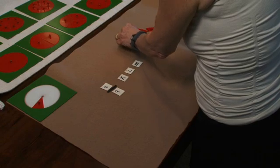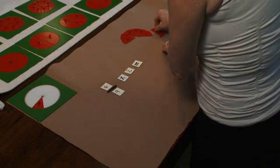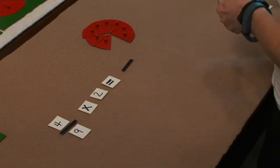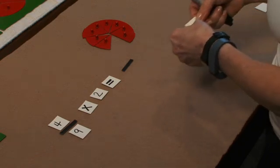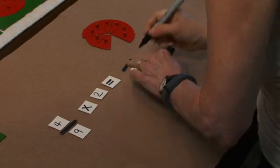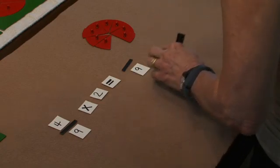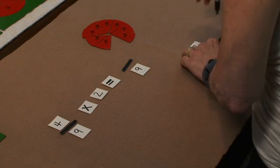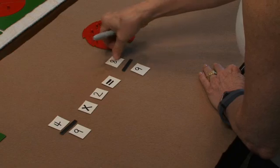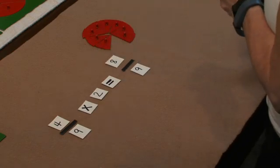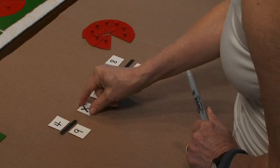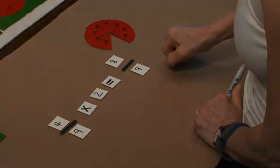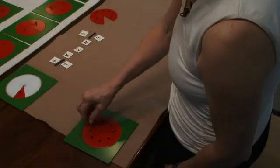And the product, the answer, is 8/9. And again, we're seeing the action happening with the numerators. 4 taken 2 times equals 8/9. I'll be doing another example.